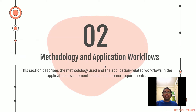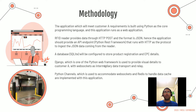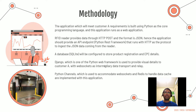For the methodology and application workflows, this application is built using Python as the core programming language — I use Python a lot in my daily work. The application runs as a web application and the RFID reader provides data through HTTP POST in JSON format. The application provides an API endpoint crafted using Python's REST framework running HTTP to ingest JSON data from the reader. A SQLite database, which works well for small mini projects, is configured to store product registration and EPC details.